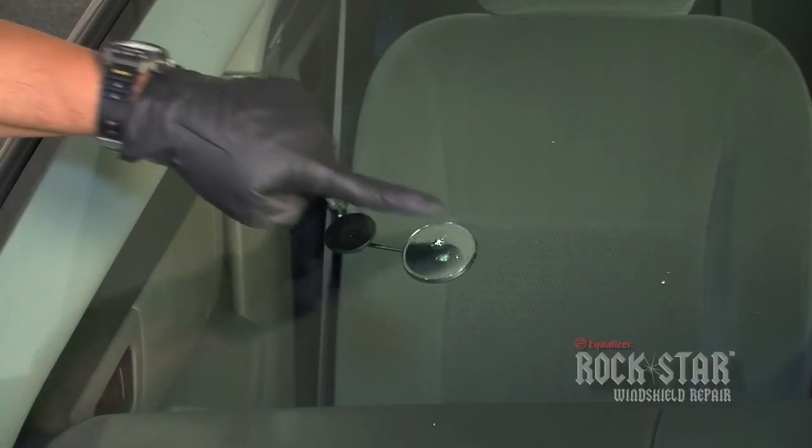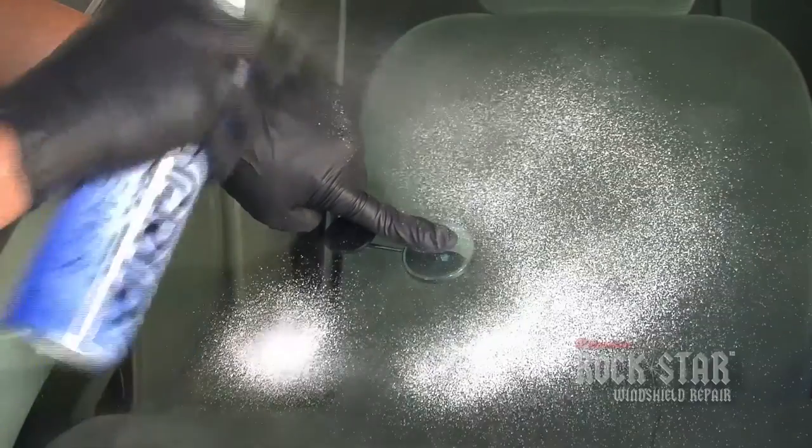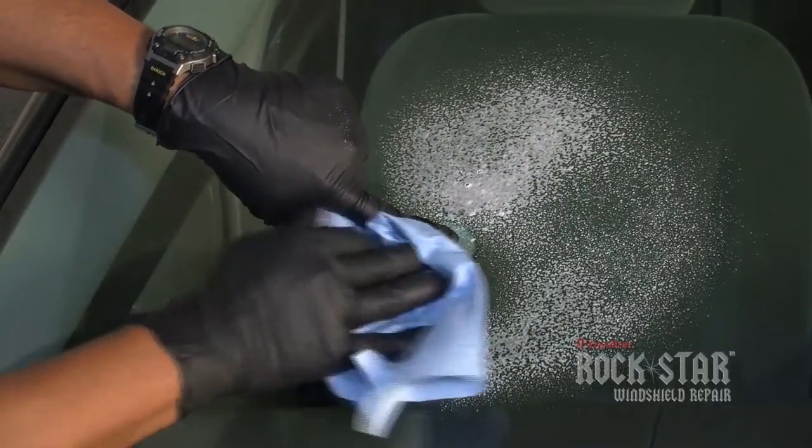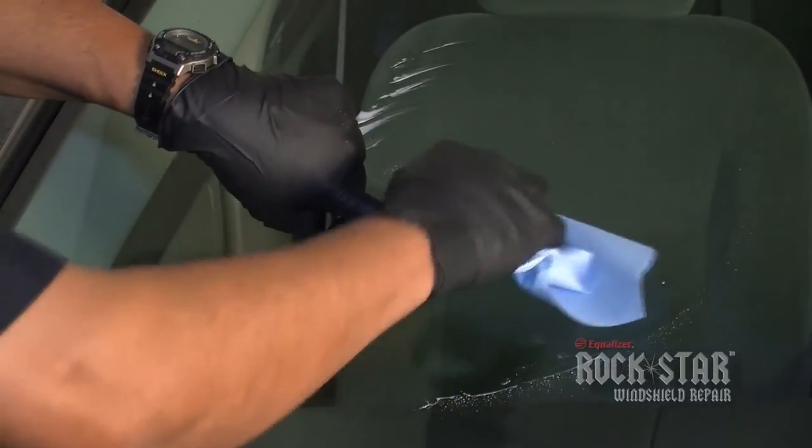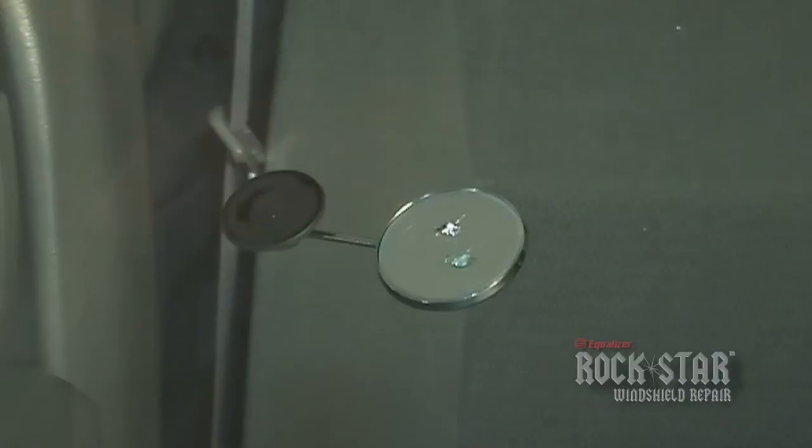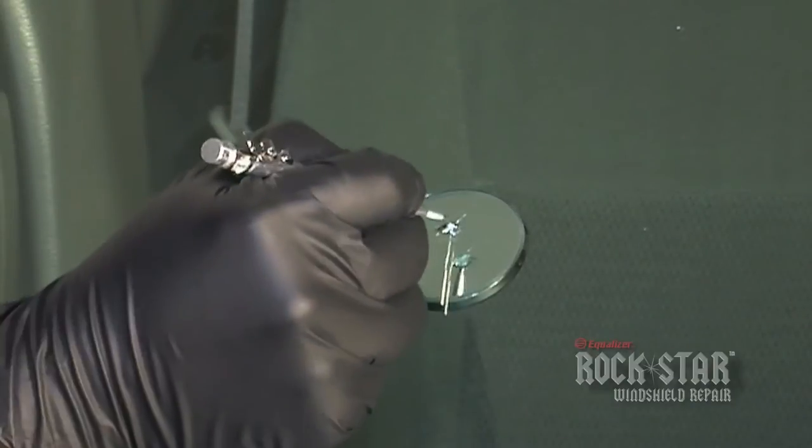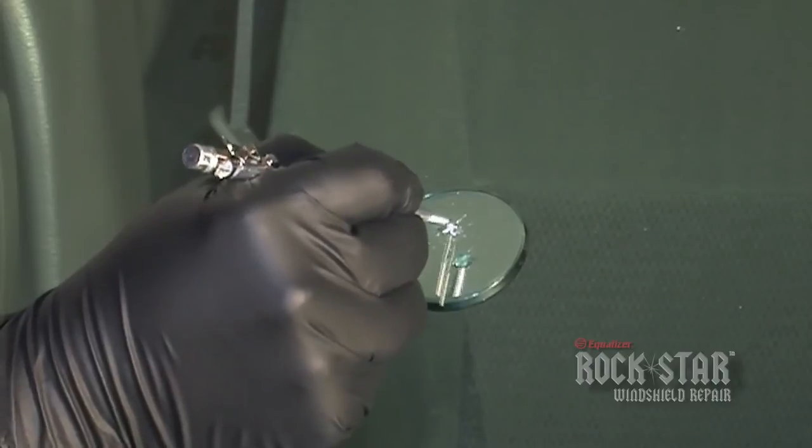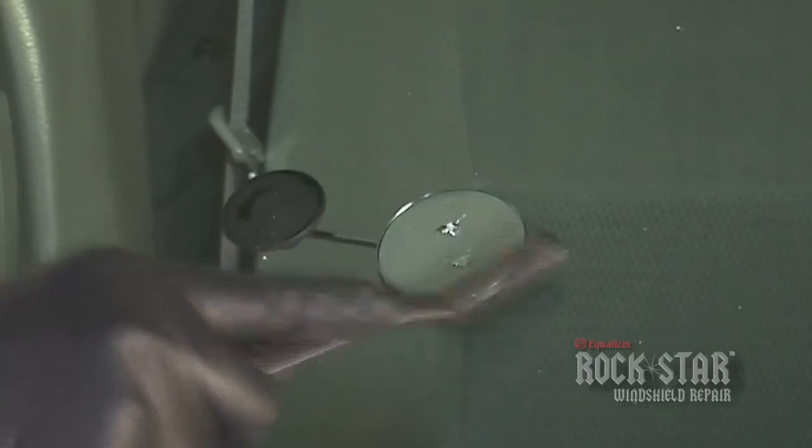Be sure to place a nitrile glove covered finger over the rock chip in order to keep from contaminating the break. Clean around the damaged area. Using the probe, remove broken glass debris from the chip. Brush away the debris from the rock chip.